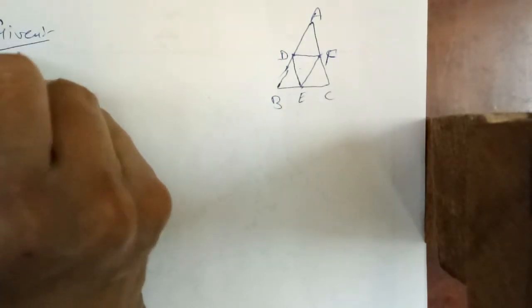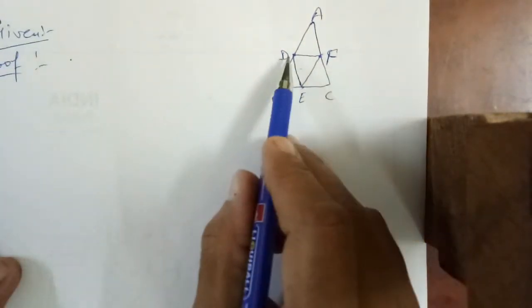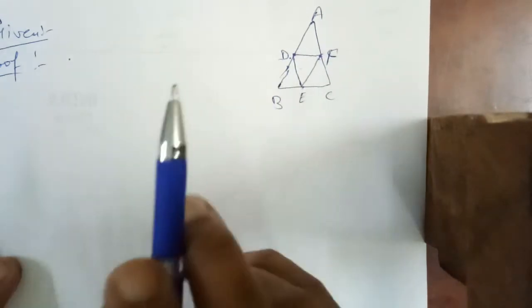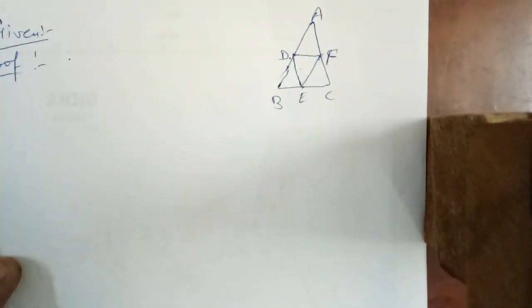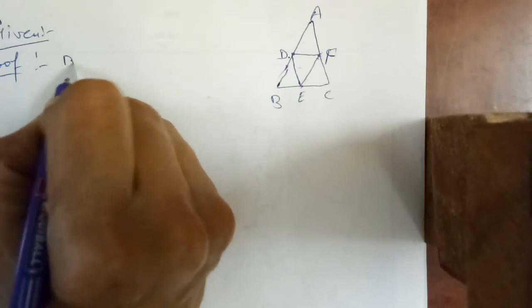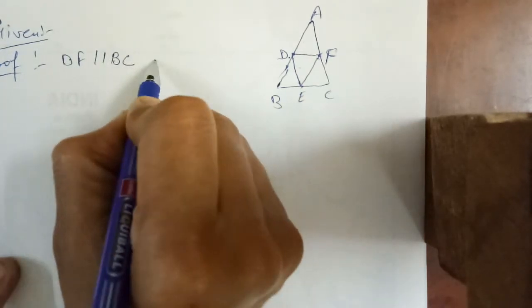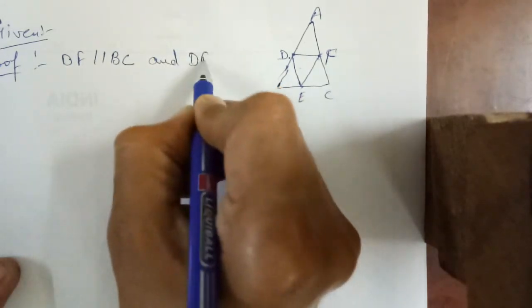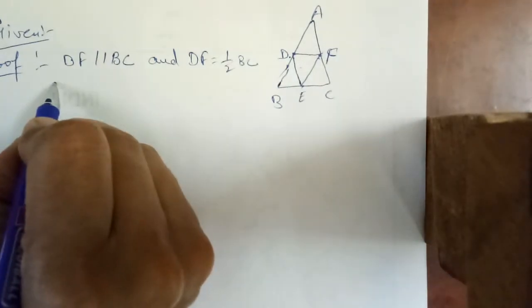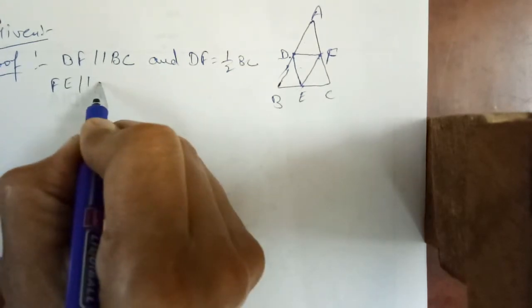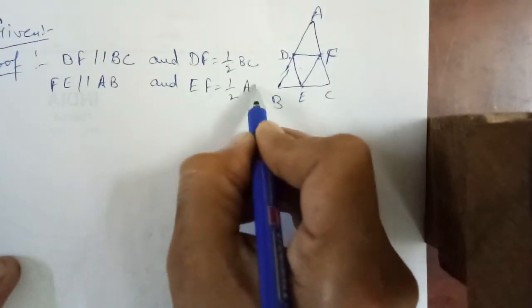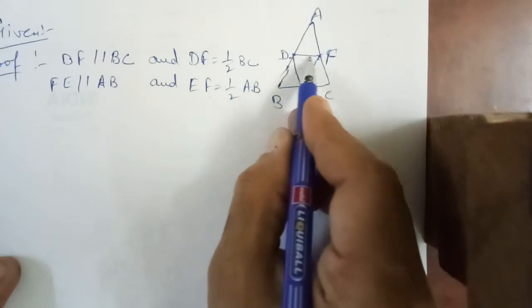Starting the proof: by the midpoint theorem, the line joining the midpoints of two sides of a triangle is parallel to the third side and equal to half of it. So DF is parallel to BC and equal to half of BC. Similarly, EF is parallel to AB and equal to half of AB. Therefore, by these parallel sides, BDEF and DCEF are parallelograms.